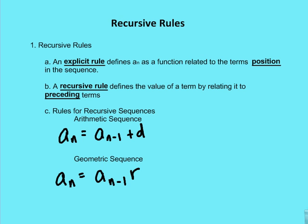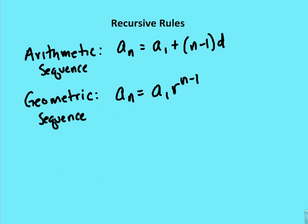So what is a recursive rule, and what is an explicit rule? We've been talking about explicit rules for the past couple of weeks. An explicit rule defines a value or some term in a sequence as a function related to that term's position in the sequence. We've got two sequences and two rules: one is an arithmetic sequence, and the other is a geometric sequence. In those sequences, we're providing explicit rules because we're providing the value of the term in relation to its position.